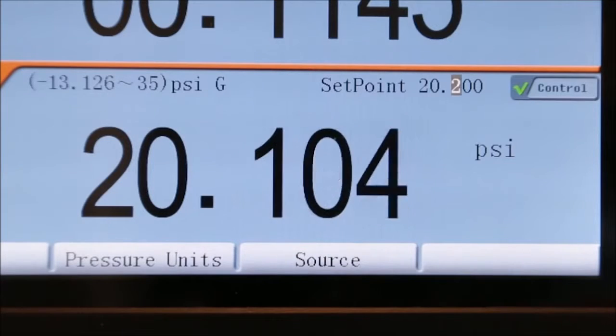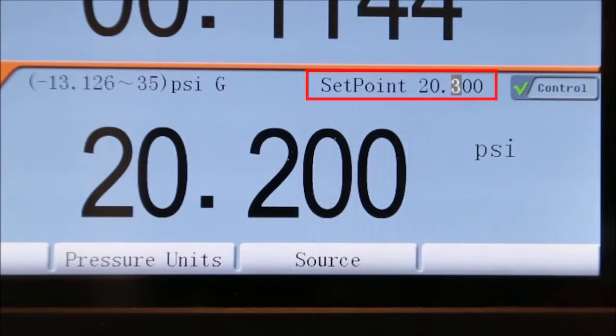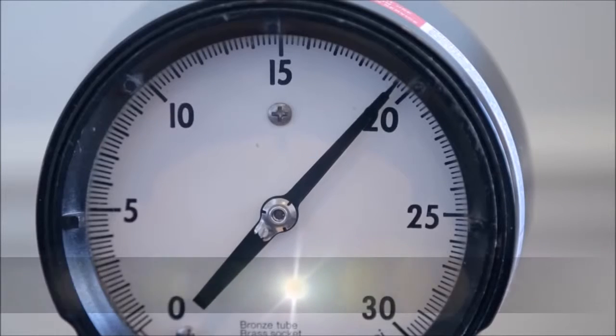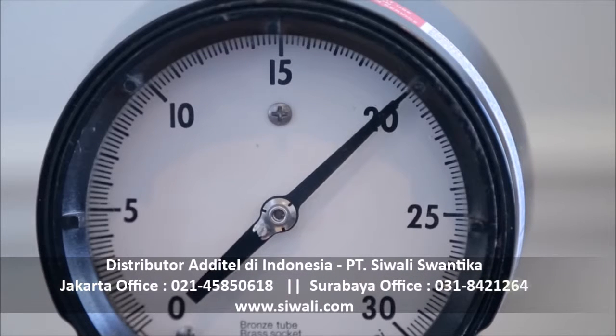For calibration of analog dial pressure gauges, Additel has included a jog pressure feature that allows you to make small changes to the controlled pressure manually so the needle can be set right on an increment. Simply use the right or left arrow keys to raise or lower the pressure to the desired level.